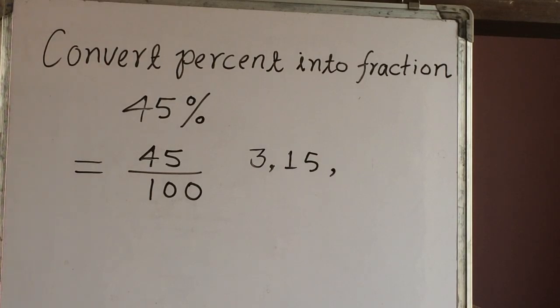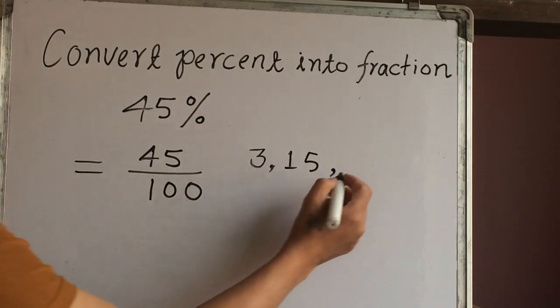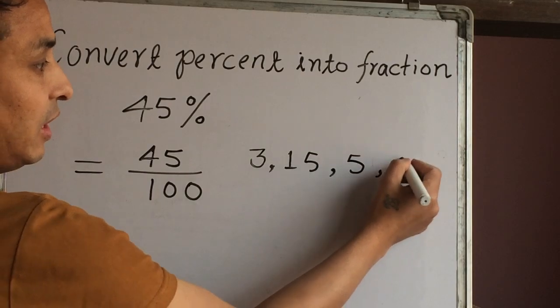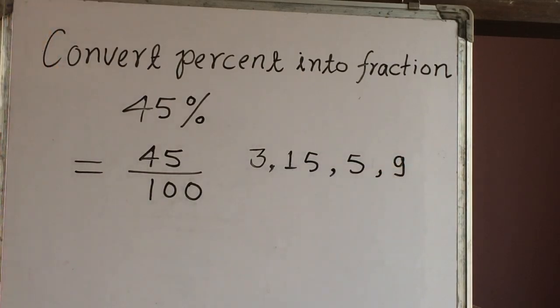In the same way, 4 - from 4 we cannot get that number. That's why 5 times 9 is 45.